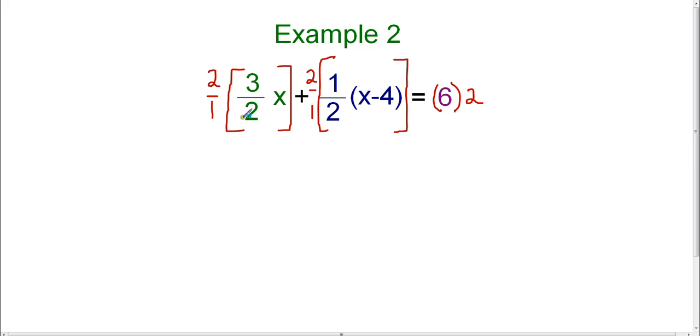So now we're going to multiply by 2. Well 2 times 3 halves, you can either multiply across or you could simplify the 2 in the numerator and the 2 in the denominator because 2 divided by 2 is 1. And 1 times 3 is 3. So 2 times 3 halves is going to leave us with 3. And then we still have the x. So this term is now 3x.